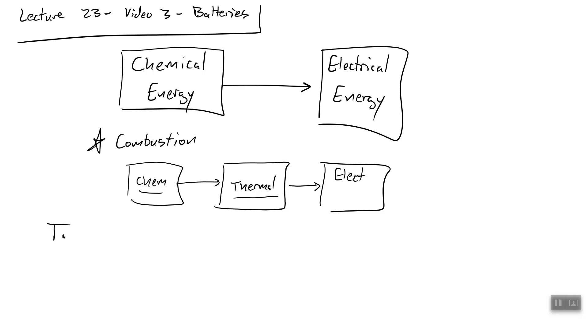There are two kinds. There is what's called a primary cell. A primary cell battery is one where the electrochemical conversion, the conversion of chemical energy into electrical energy, is not reversible. It is not rechargeable. This is a one-time-use battery, like a Duracell you buy at Walmart.